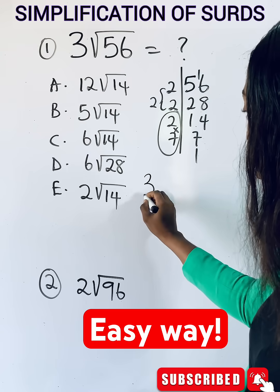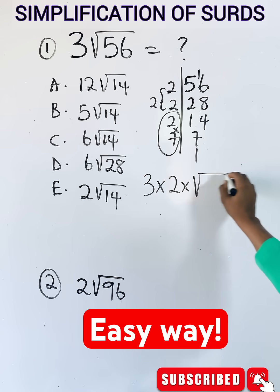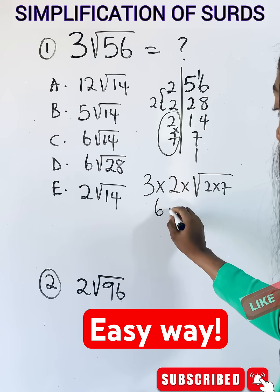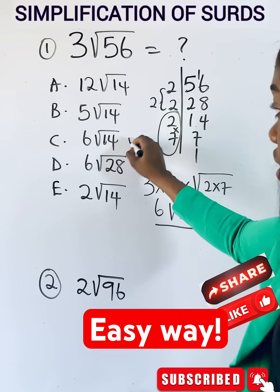you have 3 times, this will be outside, times these ones will be in the root because they can't be paired. So multiply this, you have 6 roots. Multiply this, you have 6 root 14, and that is option C.